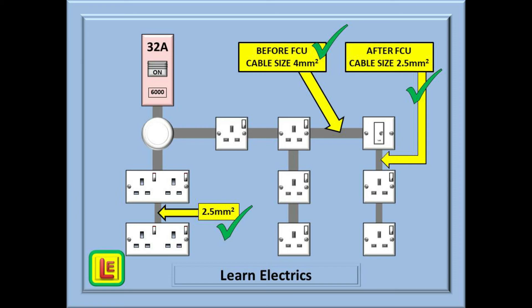For the sockets on the right, we have replaced one of the sockets with a fused connection unit (FCU) or fused spur with a 13 amp fuse fitted. The cable going to the FCU must be 4 millimetres, but all the cables after that can be 2.5 millimetre or even 1.5 millimetre, since that part of the circuit can never draw more than 13 amps. Also on this drawing, the bottom-left socket has been installed using 2.5 millimetre cable — this is fine, but because the cable size has been reduced that leg of the circuit stops there; it cannot be extended any further. If this socket needs to be extended then an FCU must be installed for the reduced cable sizes, or if practical, remove the 2.5 millimetre cable and replace it with 4 millimetre cable.